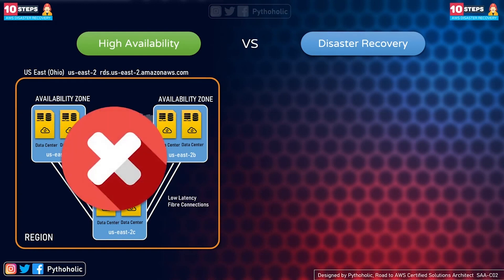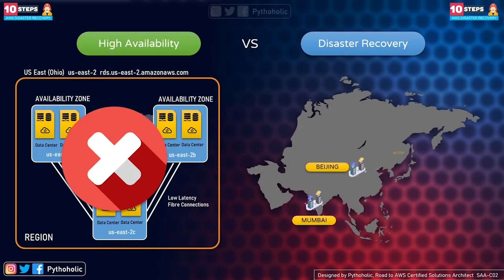But what if the whole region gets affected? In simple words, your high availability is now zero availability. That's where disaster recovery comes in handy, because disaster recovery tells us to have a multi-site deployment strategy — deploying the application in other regions as well, as shown here. If your application is not responding in one region, it can respond using other regions.